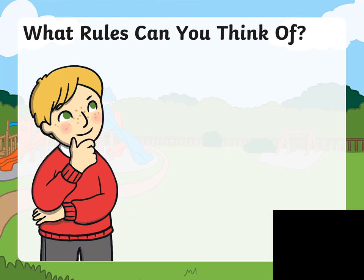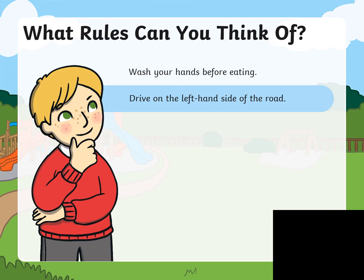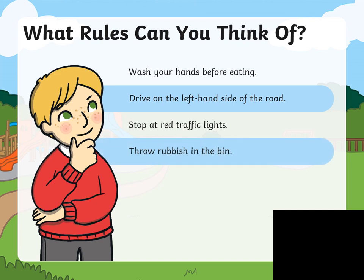What rules can you think of? If I ask you to mention some examples of rules that you already know, we can mention that we need to wash our hands before eating, drive on the left hand side of the road, stop at red traffic lights, throw rubbish in the bin. We never throw garbage on the floor when we are in class, at home, in the street, in the school, anywhere. We always need to find a trash bin and throw the garbage in.